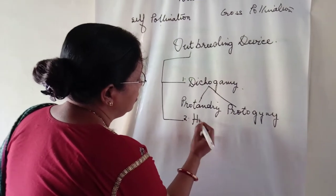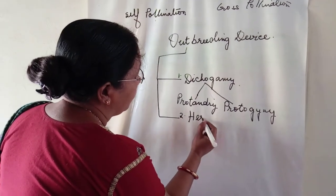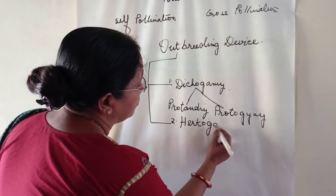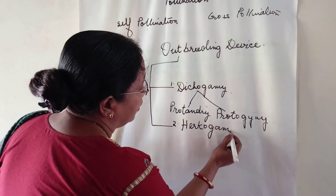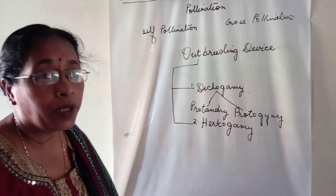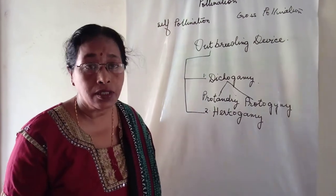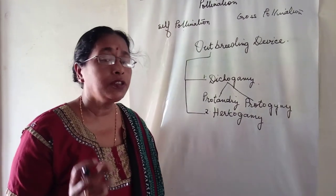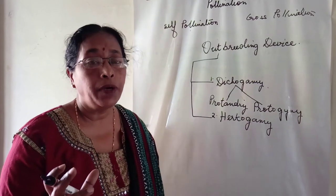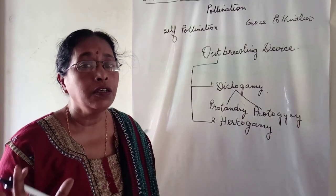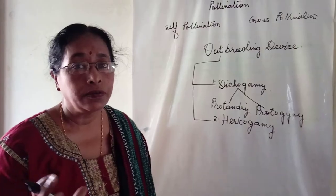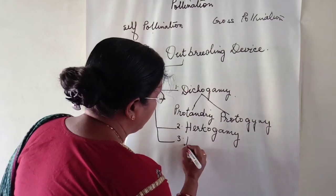The second outbreeding device is herkogamy, where certain obstacles or barriers are present in the flower itself which do not allow the male part to fuse with the female part. The third is heterostyly.